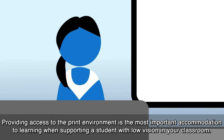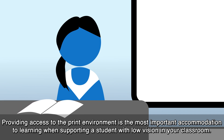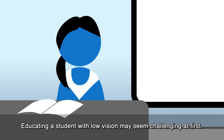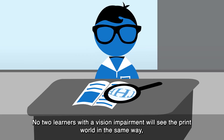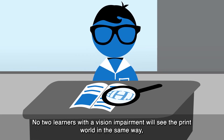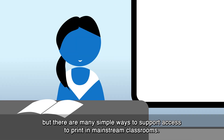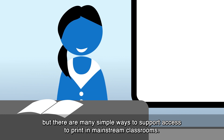Providing access to the print environment is the most important accommodation to learning when supporting a student with low vision in your classroom. Educating a student with low vision may seem challenging at first. No two learners with a vision impairment will see the print world in the same way. But there are many simple ways to support access to print in mainstream classrooms.